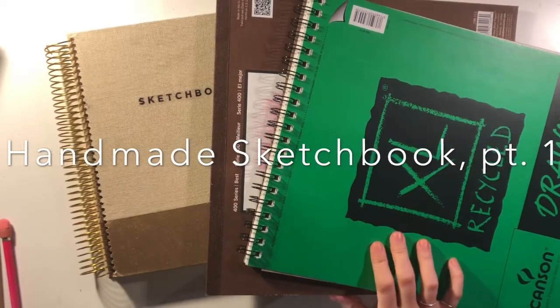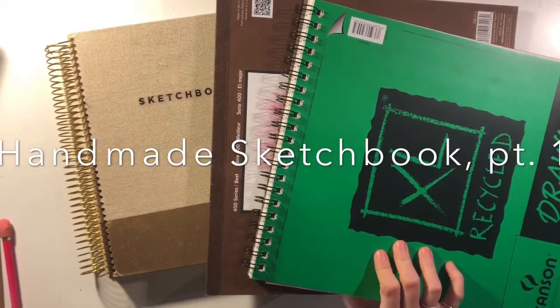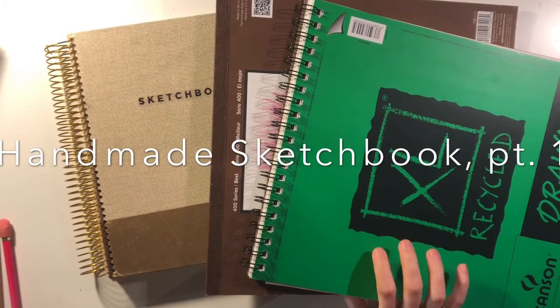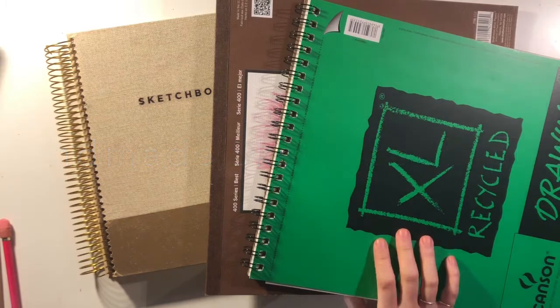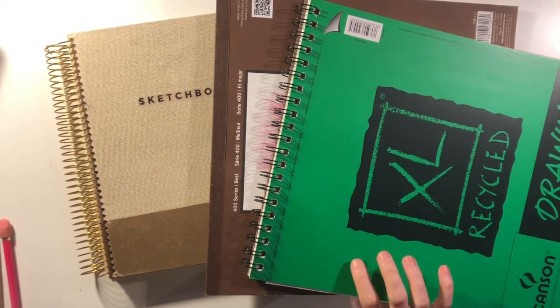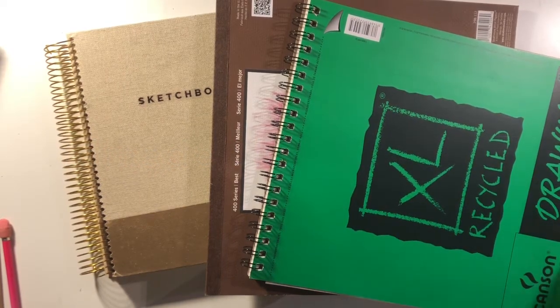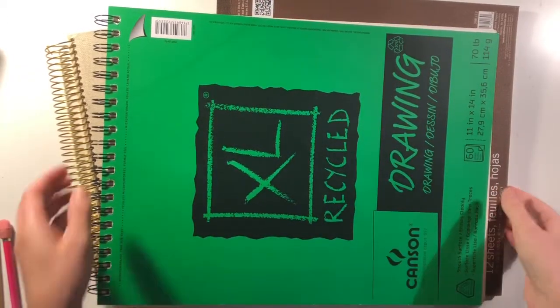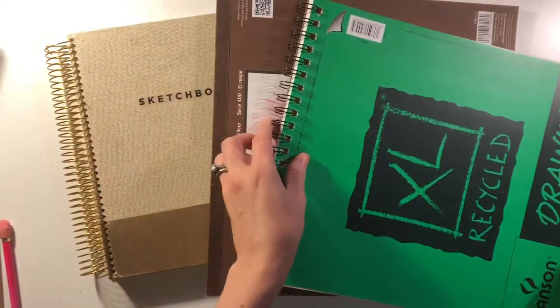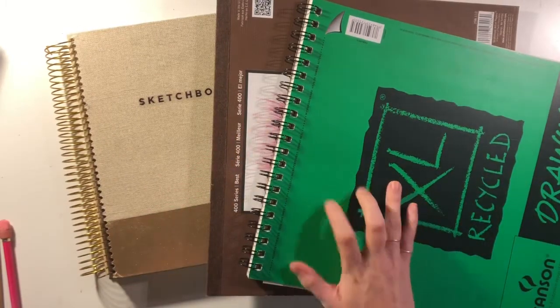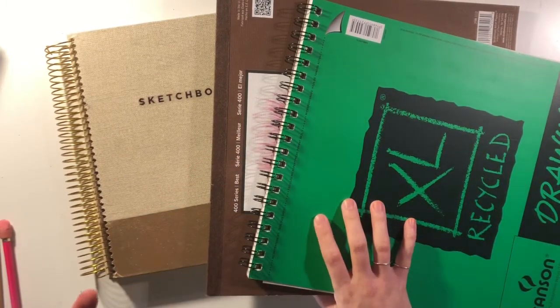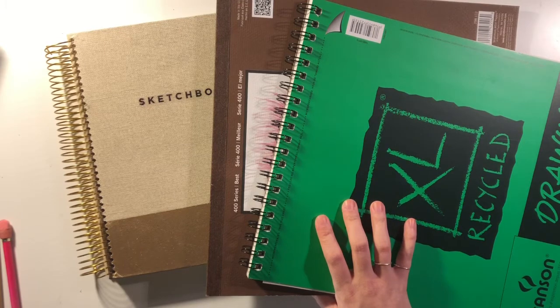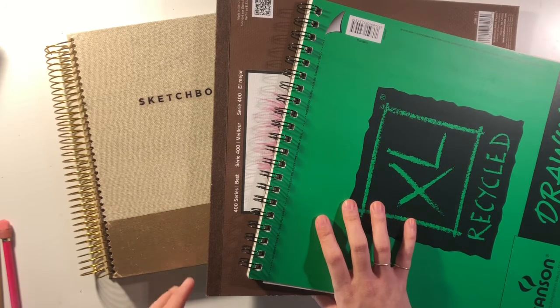Today we're going to be prepping the inside pages for our handmade sketchbook. I've asked each of you to purchase a 9 by 12 inch sketchbook, preferably with mixed media style paper. You can do this assignment with regular drawing paper, but I personally prefer mixed media paper because it's much better if you ever plan on painting inside your sketchbook or collaging using any sort of wet media—acrylic, watercolor, anything like that.